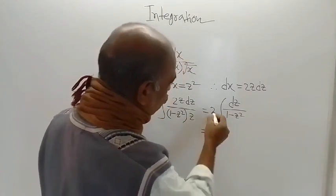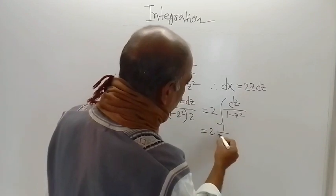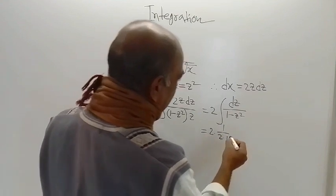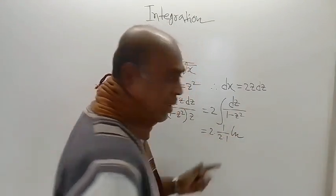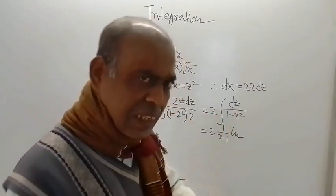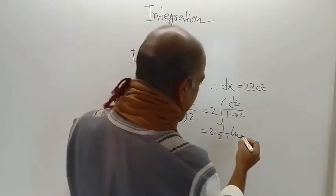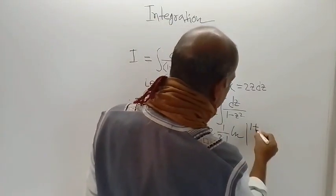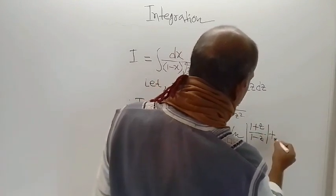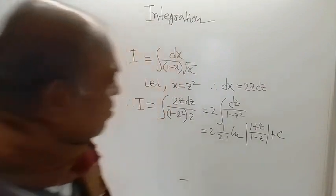The formula is: 2, then 1 by 2 into 1. This is 1 square. So 2 into 1 into log, or ln I have written, that means log of something to the base e. It is 1 plus z divided by 1 minus z, plus a constant of integration c.